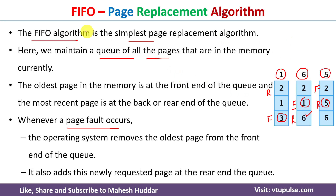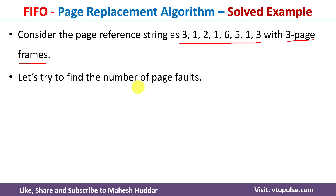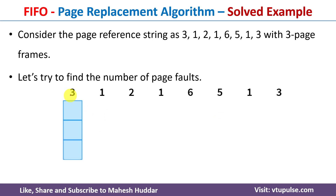Now we will take one complete example to understand how the FIFO algorithm works. The process is making these page references: 3, 1, 2, 1, 6, 5, 1, 3. This is a three page frame architecture, meaning three frames are given to the particular process. We need to find the number of page faults. Initially the process requests page 3, which is not present in primary memory because initially nothing is present — this is a miss, or page fault.